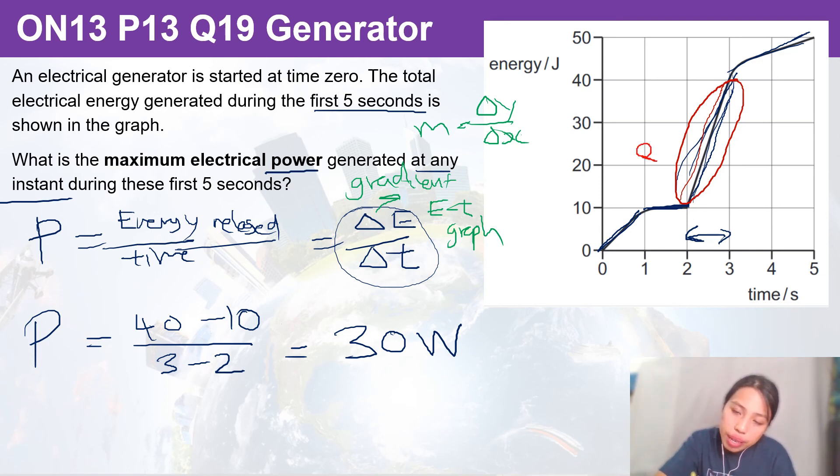Reminder here: power is the gradient of this graph, at this straight line here. Thankfully we only look at straight lines because if it's curvy we have to do some mad stuff there. So remember, gradient is power for this E-t graph.